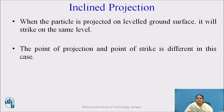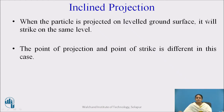When the particle is projected on level ground surface, it will strike on the same level. The point of projection and point of strike is different in this case. If you consider any particle and if you are throwing it upward, it is going vertical, but it will have two directions — vertical as well as horizontal. So, we will consider it as the inclined projection.